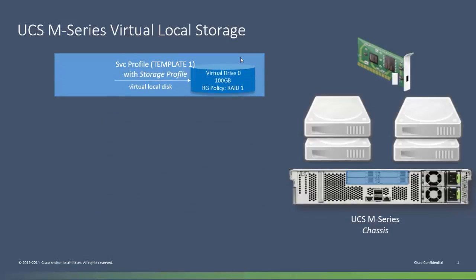Here's a service profile. This service profile contains a UCS Manager storage profile that consists of a list of one or more virtual local drives to be presented to the server. Each individual virtual local drive has its own size — 100 gigabytes in this example — and a UCS Manager RAID group policy. The RAID group policy specifies details like the RAID level — RAID one mirroring in this example — and a few other details we'll look at in the live demo.